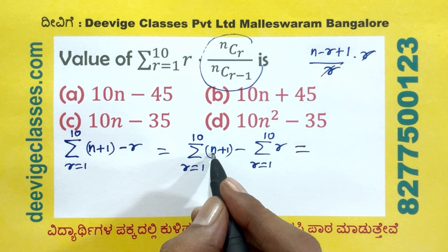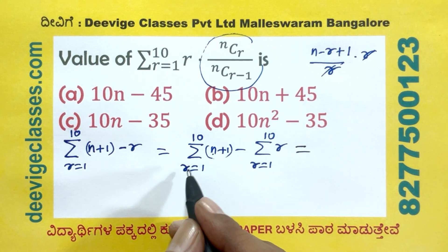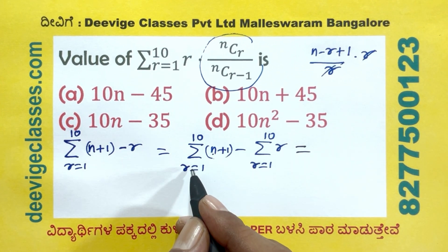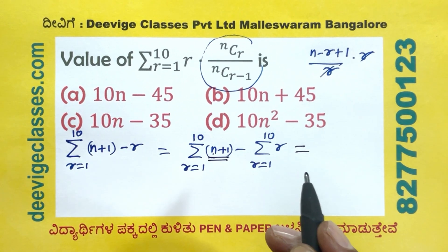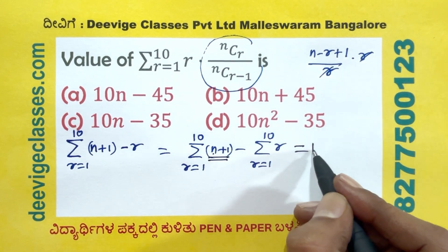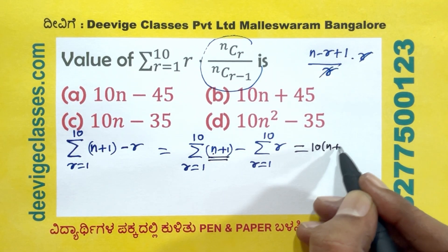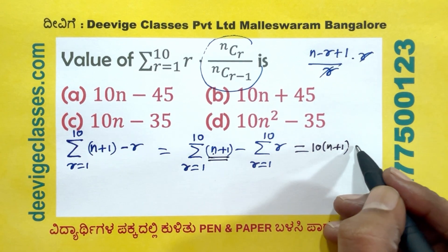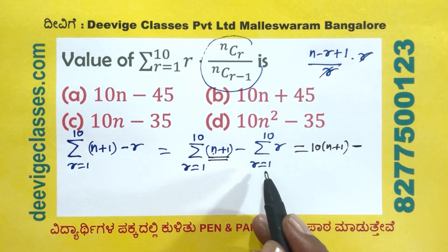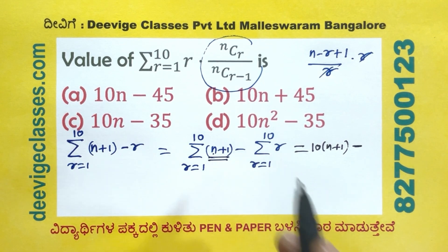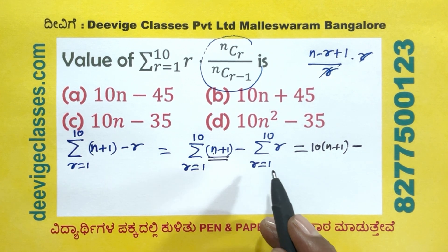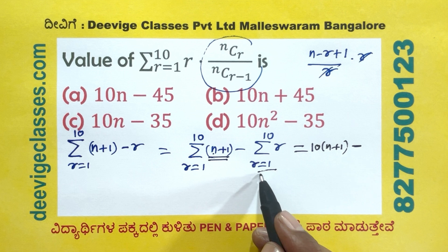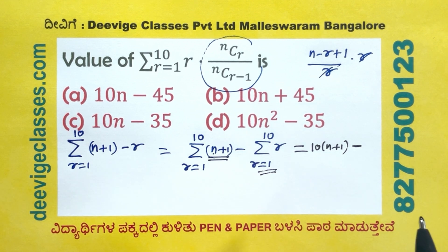So that is summation r equals 1 to 10 of n plus 1 minus summation r equals 1 to 10 of r. With n equal to 10, we get sigma of 11 minus r. n plus 1 equals add, so 10 times n plus 1, minus the sum of r equals 1 to 10.